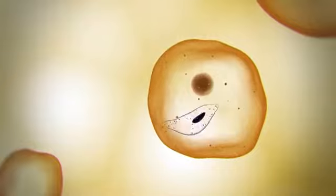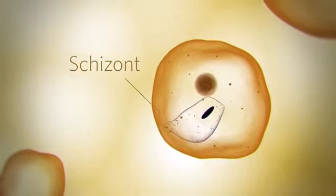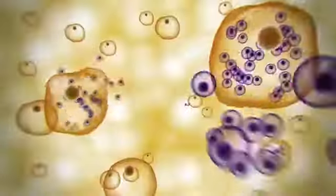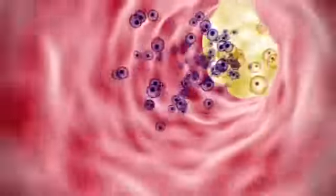The parasite develops into mature schizonts, creating tens of thousands of merozoites, which burst out of the cell and journey back toward the bloodstream.